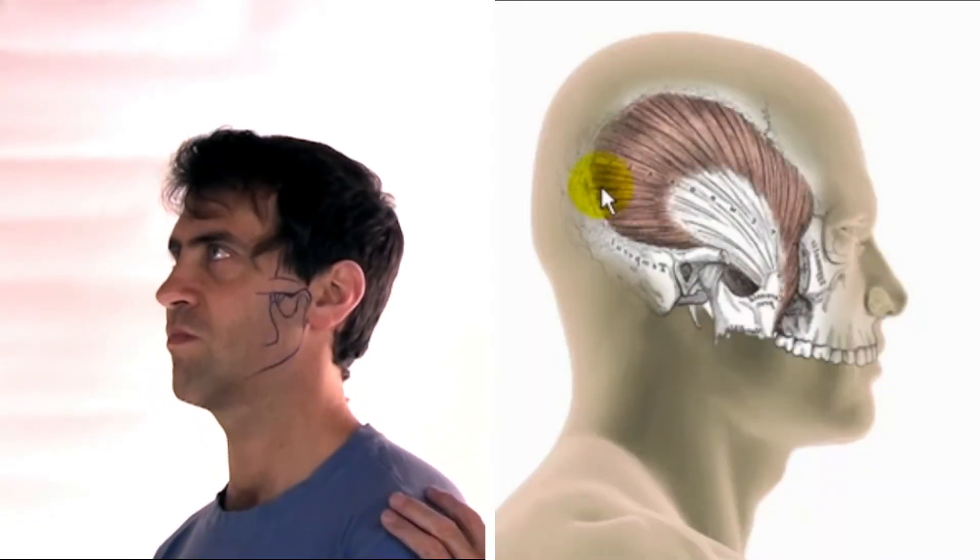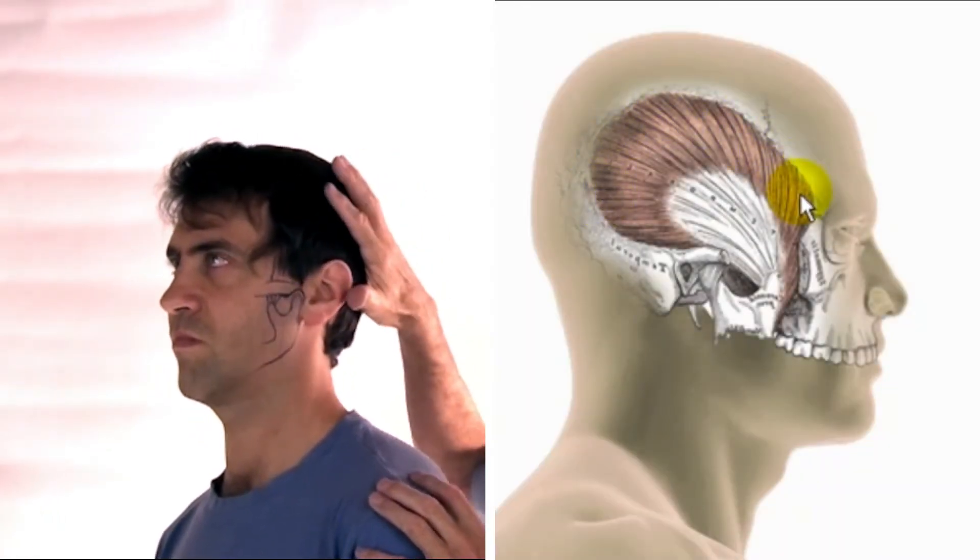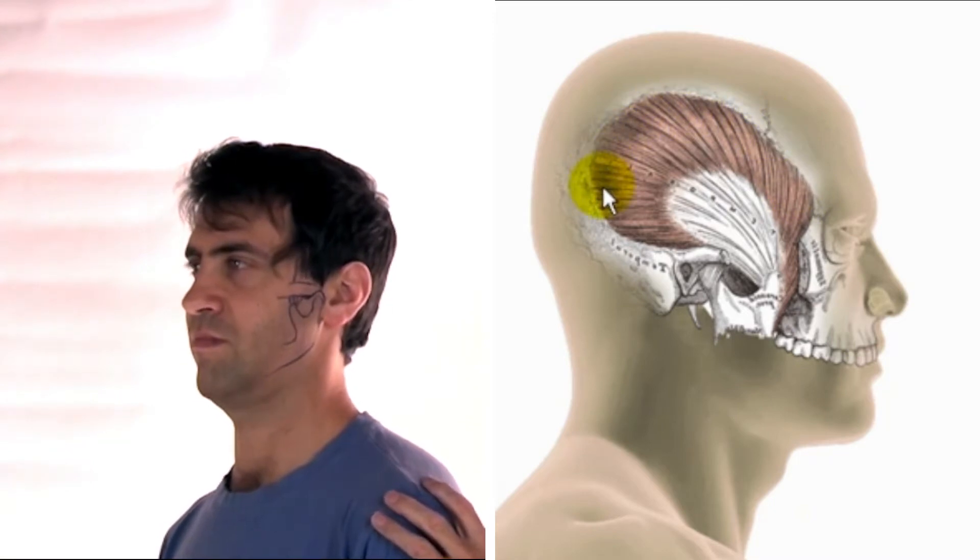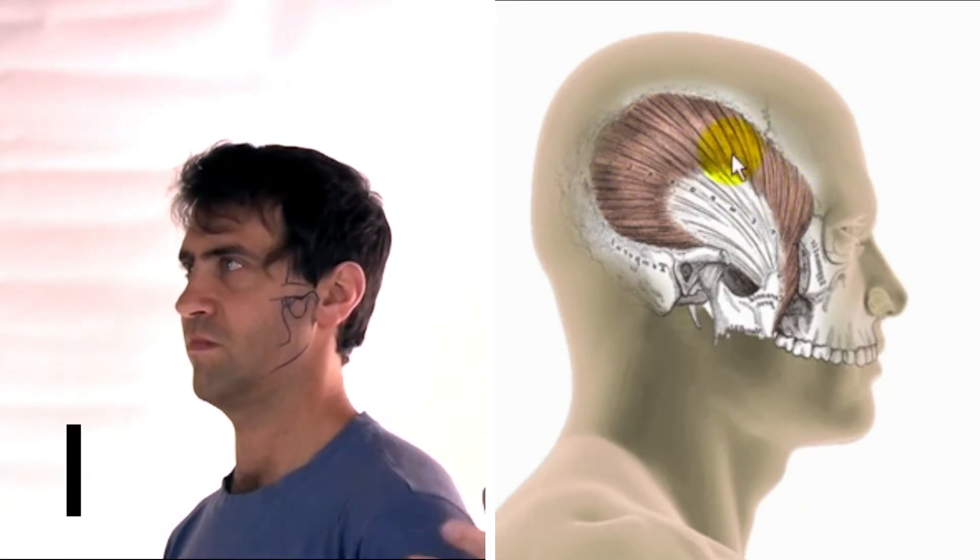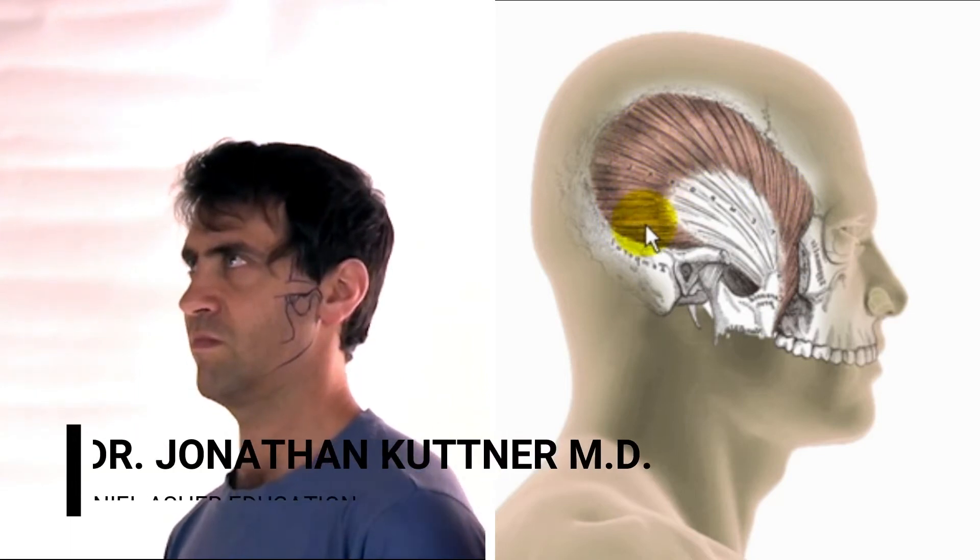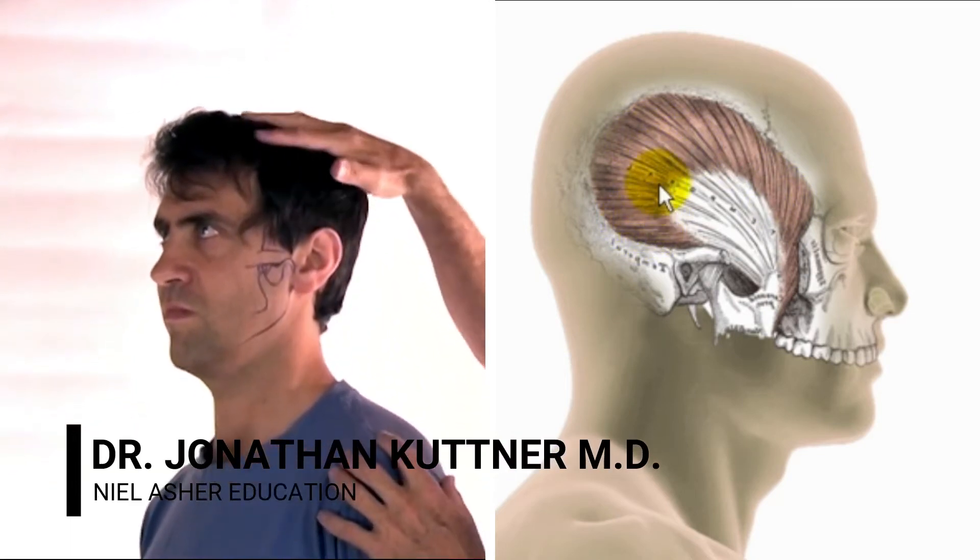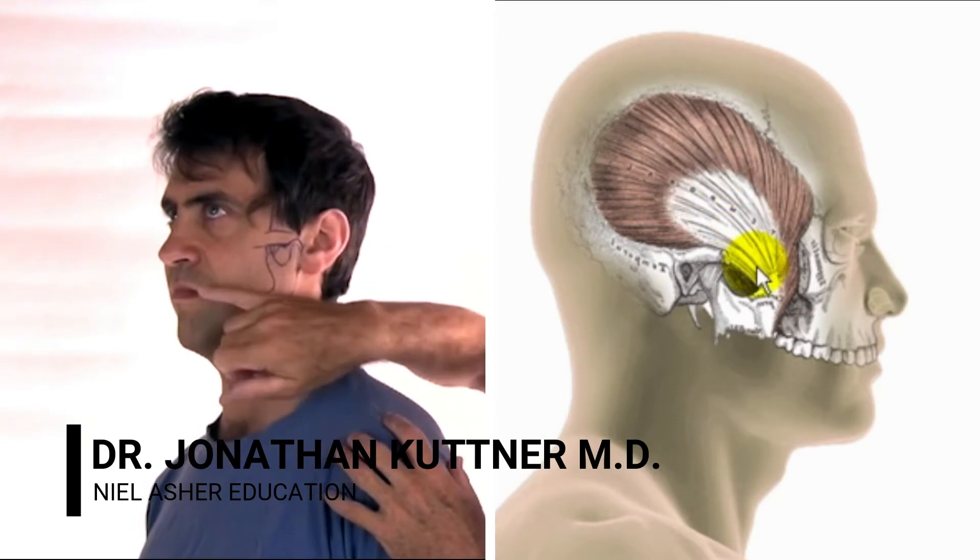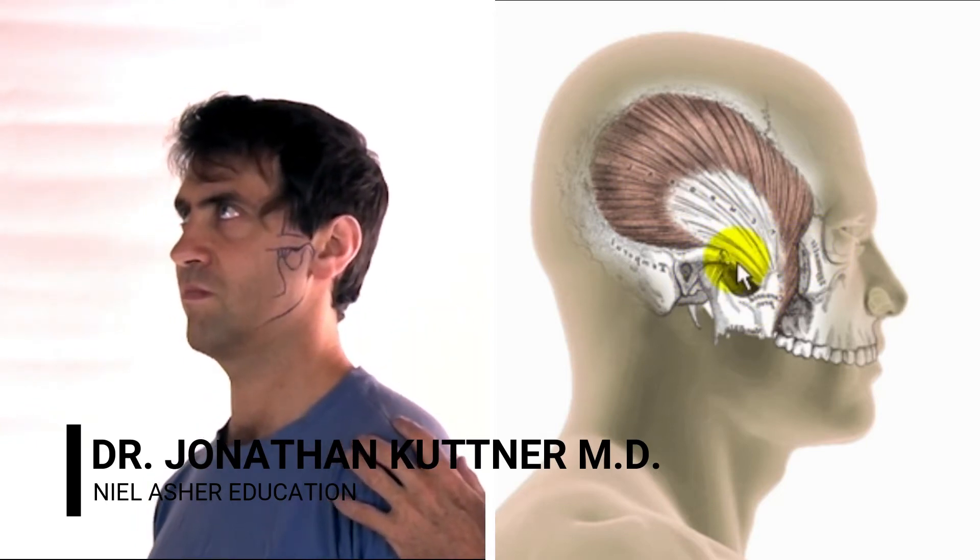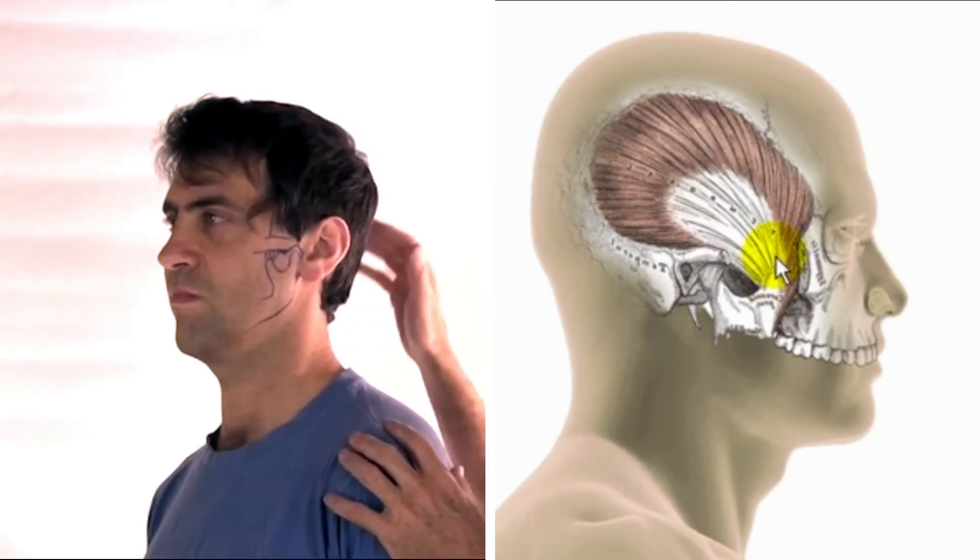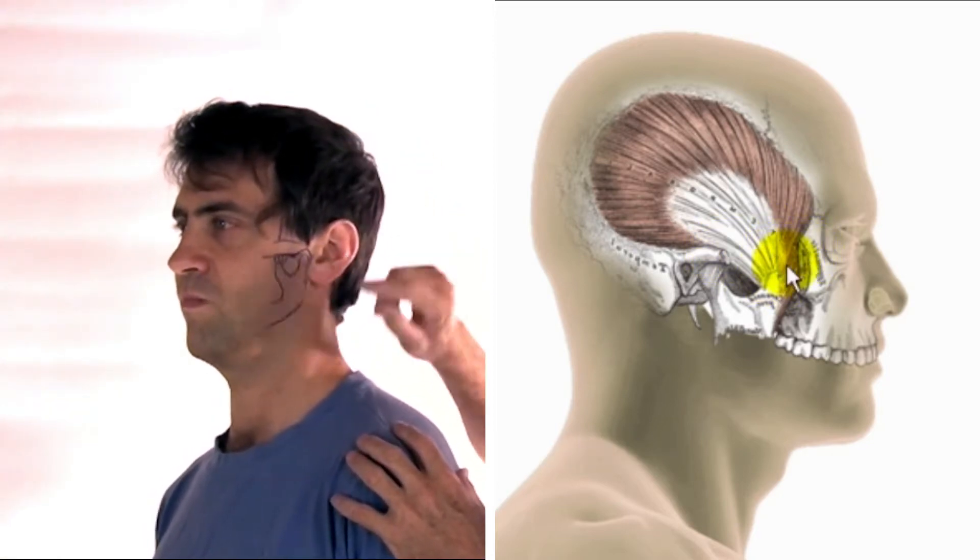The temporalis muscle has a broad attachment here on the side of the skull. You can see that the muscle itself is a good-sized muscle, even though it's flat. It then becomes a tendon, tucks under the zygomatic arch, which is your cheekbone. You can see it's been cut here so you can see the muscle more clearly.